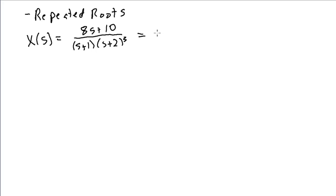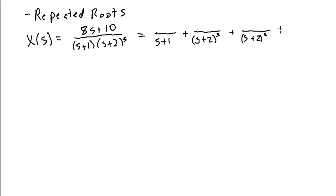I can handle the s plus 1 term just as previously with a constant. For the repeated roots, I need to expand as s plus 2 cubed, and also s plus 2 squared, and also s plus 2 — starting with the highest power and including terms for successive powers all the way down to the first power. I can get the s plus 1 coefficient using the cover-up method, evaluating at s equal to minus 1: numerator gives 2, denominator gives minus 1 plus 2 cubed which is 1, so the coefficient is 2.